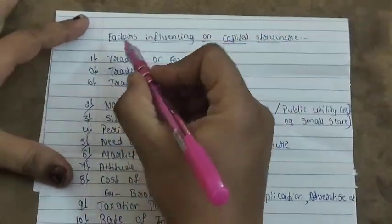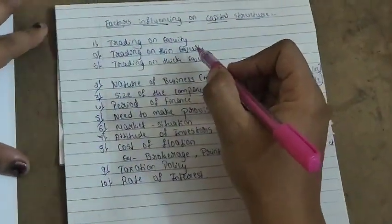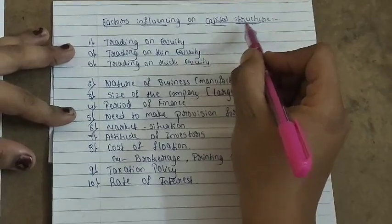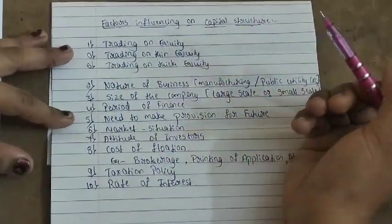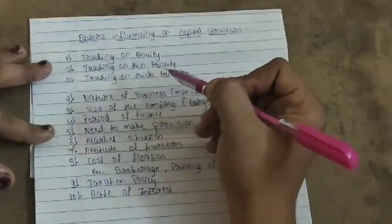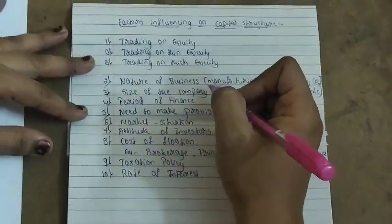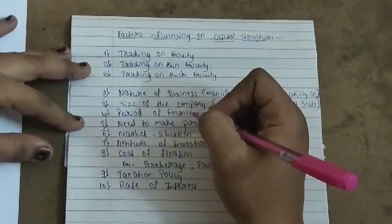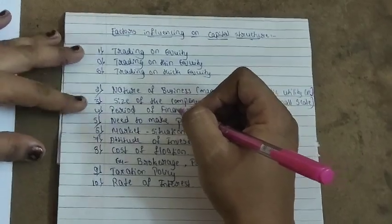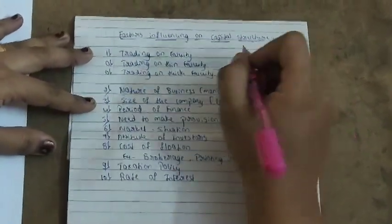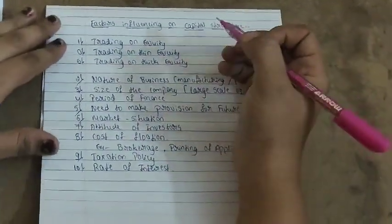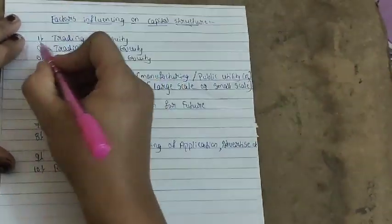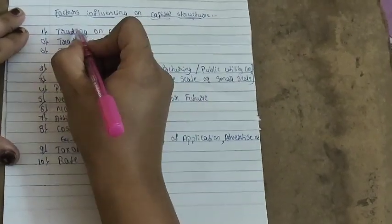Moving to the next important concept — factors influencing capital structure. After discussing the meaning and definition of capital structure and capital gearing, we now look at what factors influence a company when framing its capital structure. The first important factor is trading on equity.